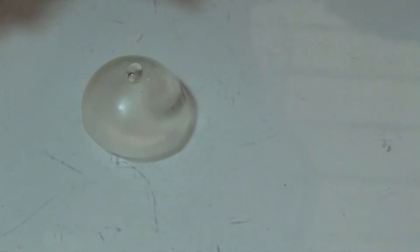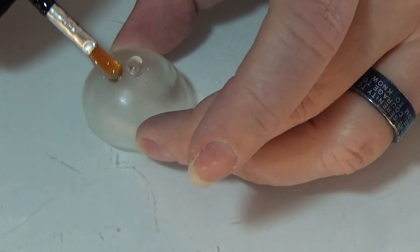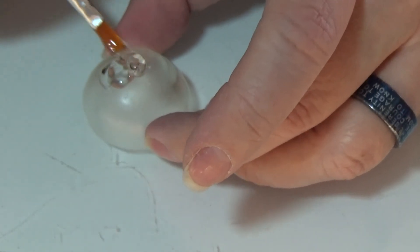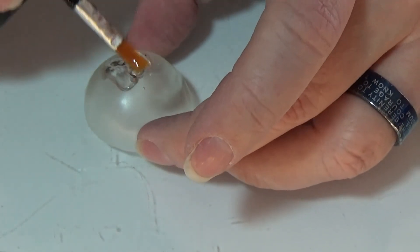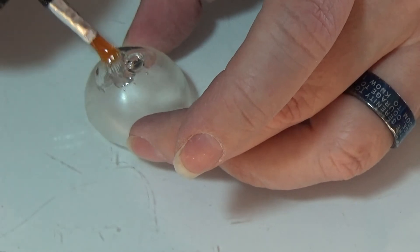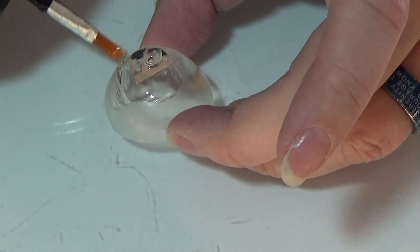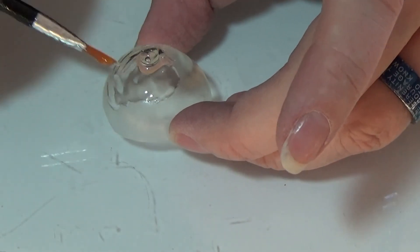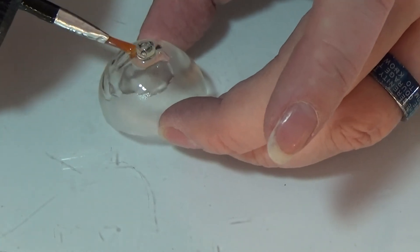So I'm going to take some more of my UV resin and I'm going to carefully paint it with a little brush all over the dome. And when I have it in a thin layer all over, I'm going to put it into my UV lamp.